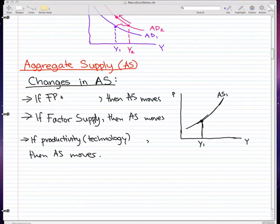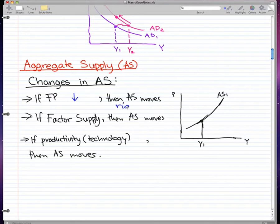If factor prices decrease, then our aggregate supply moves right. That is because factor prices are the price of inputs. If our inputs get cheaper, we can make more given the same price, and that's why our aggregate supply moves right.